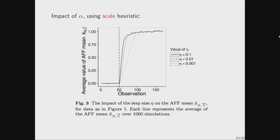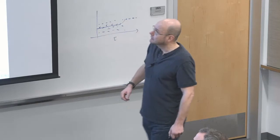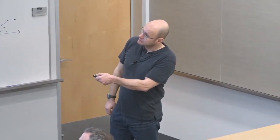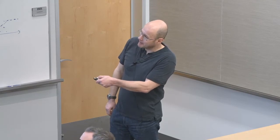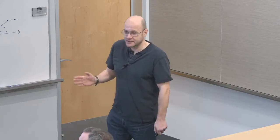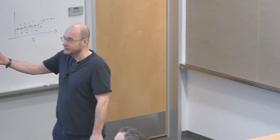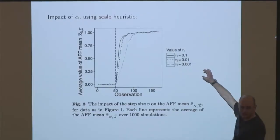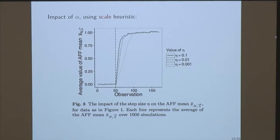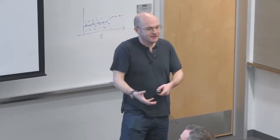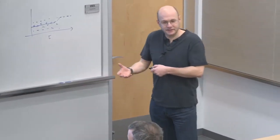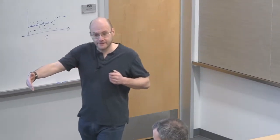Looking at three different choices using the scale heuristic, the shape looks as you'd expect. The smaller the learning rate, the slower the thing can move. But these are orders of magnitude different and we're getting pretty similar results, so it may not be too critical. There's some reason to be hopeful that the choice of that parameter isn't as critical as the choice of a sliding window parameter.